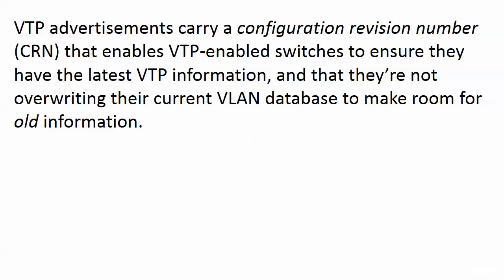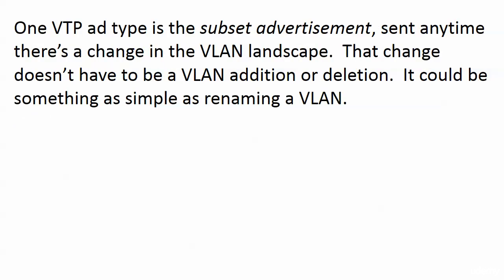Those advertisements carry a configuration revision number — a CRN — that we've seen in show VTP status. These enable VTP-enabled switches to make sure they have the latest VTP info. When a switch receives an ad from a neighbor, it checks: is this really the most up-to-date information? Just because a downstream switch tells you something doesn't mean it's the latest. We don't want a switch receiving a VTP ad and overwriting its current database with old information. That's where the CRN comes in.